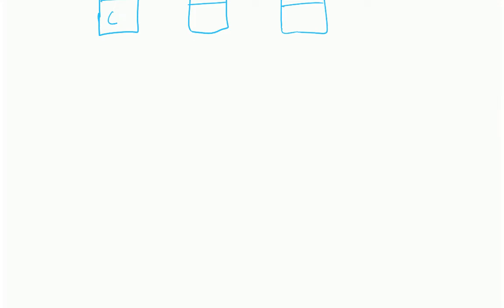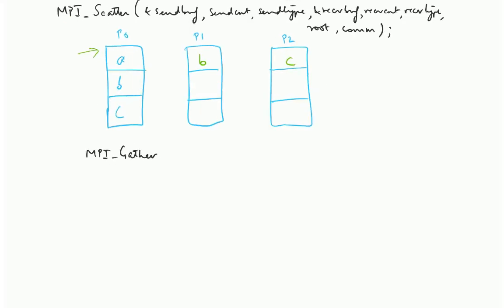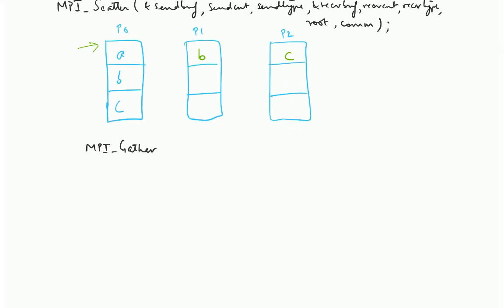And the obvious question is how would they come back? Well, they come back using a call called MPI gather. This is analogous to MPI scatter, it is exactly the opposite, same set of parameters.